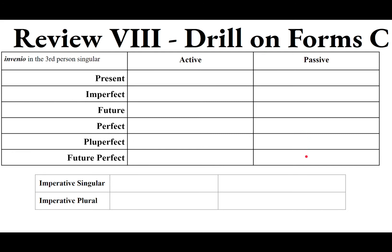For the perfect, pluperfect, and future perfect passive, use the fourth principal part INVENTUS, giving it feminine and neuter endings: INVENTUS A UM. The present INVENIT means he/she/it finds; the passive INVENITUR means he/she/it is found / is being found. The imperfect INVENIEBAT means he/she/it was finding; the passive INVENIEBATUR means he/she/it was being found.